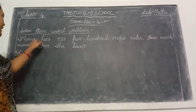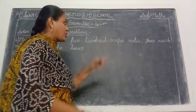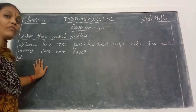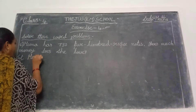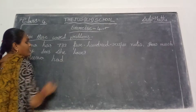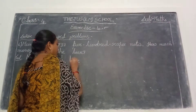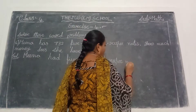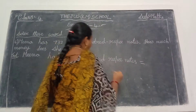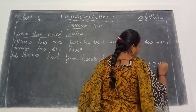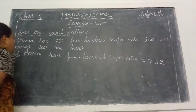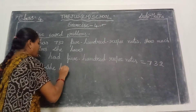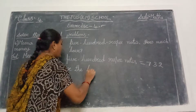See our next problem, children. Meena has 732 500-rupee notes. So 500-rupee notes — how many does she have? 732. So totally, how much amount does she have now? Now we find out. First, write here: Meena had 500-rupee notes. How many are there? 732 notes. Now we find that how much money does she have.